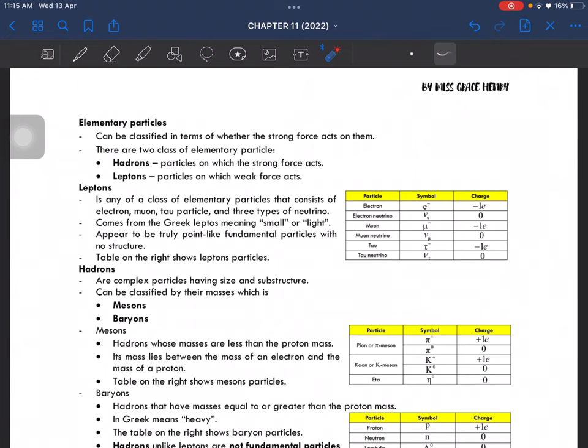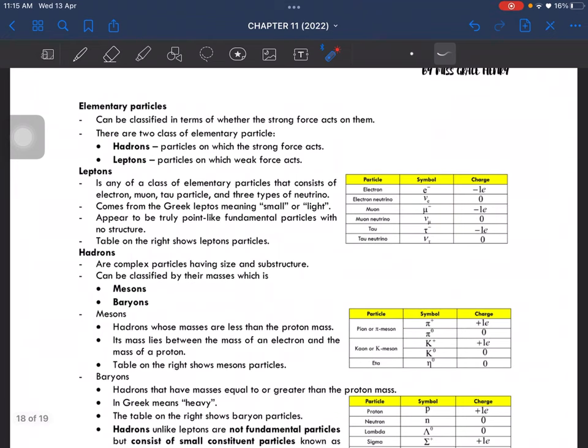Leptons are any class of elementary particle that consists of electron, muon, tau particle, and three types of neutrino. Lepton is from a Greek word meaning small or light. They appear to be truly point-like fundamental particles with no structure. These are some of the characteristics of lepton particles.